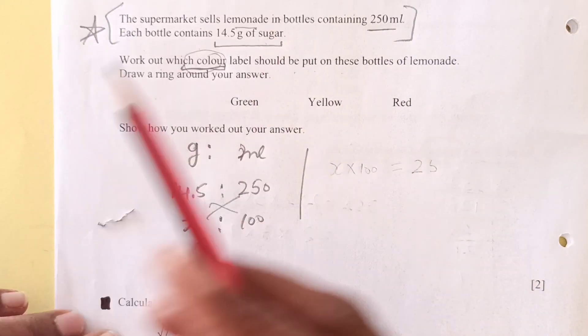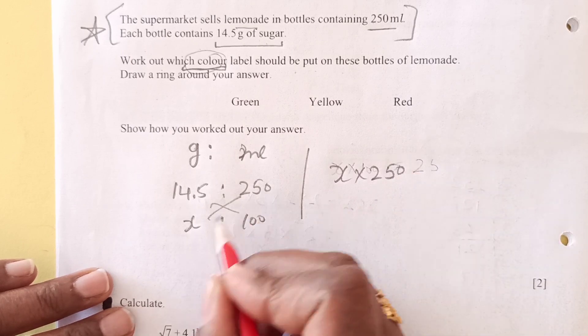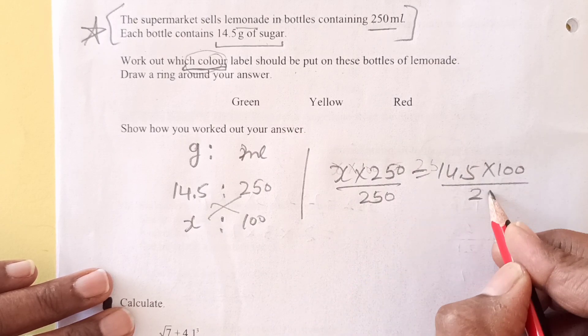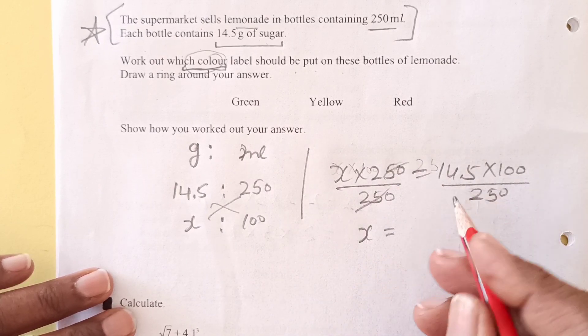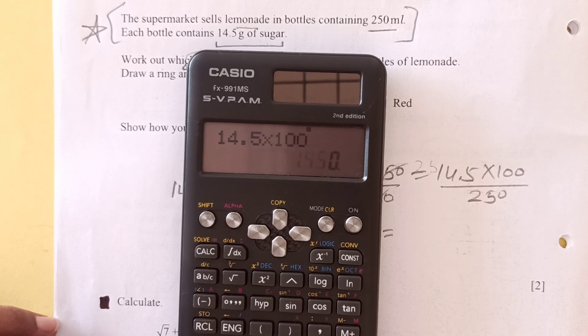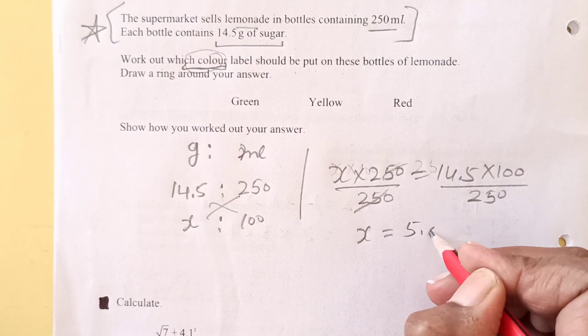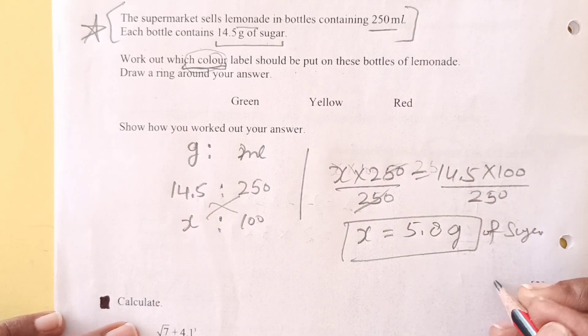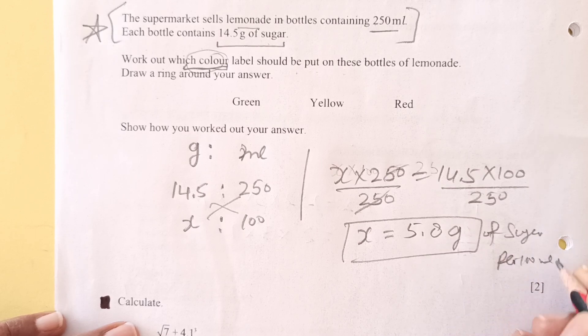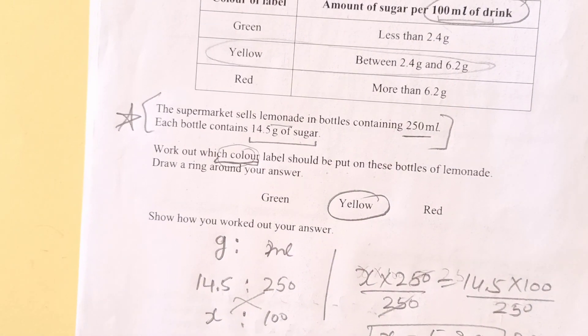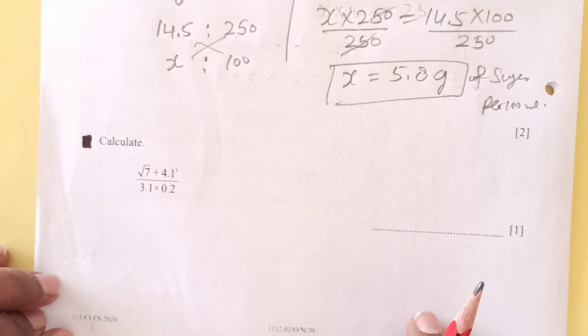Divide by 250. So x is equal to 14.5 times 100 divided by 250, which is 5.8. So what is this 5.8? This is grams, 5.8 grams of sugar per 100 ml. So this comes in this range, you see. So they are going to put yellow label, right? You understood?